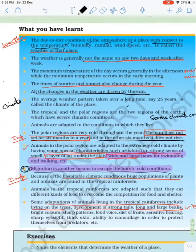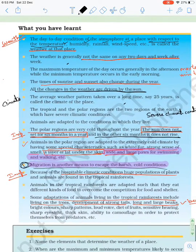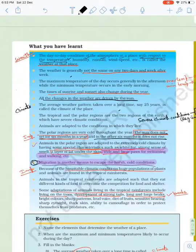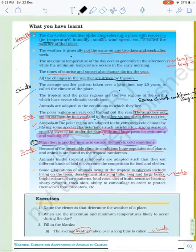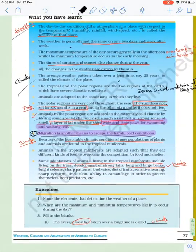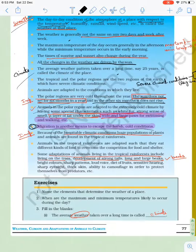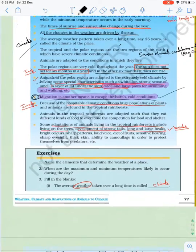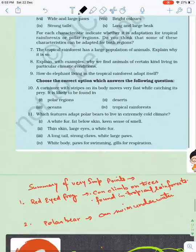So what you have learned - you can go through whether climate can be a difference. Important points: for six months the sun does not set in polar regions. Migration is another means to escape the harsh cold conditions. You can go through it.